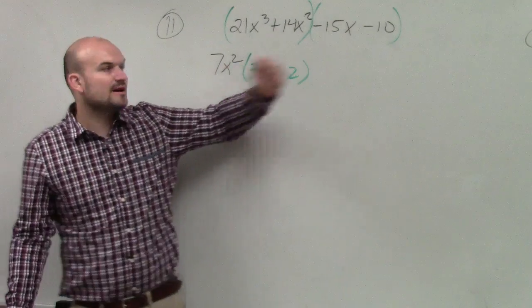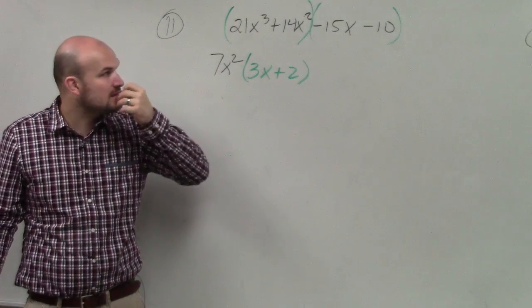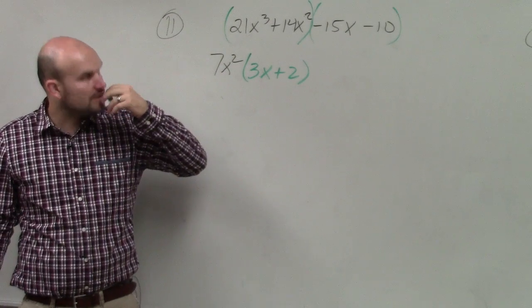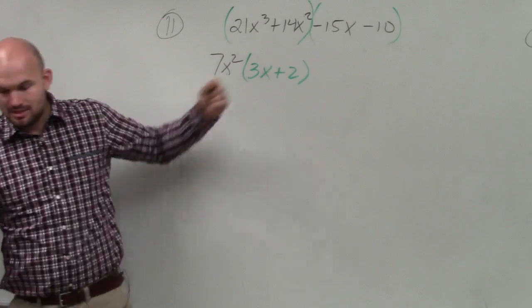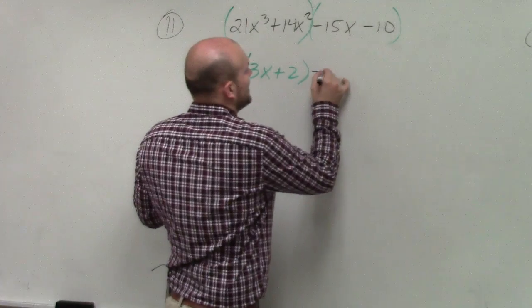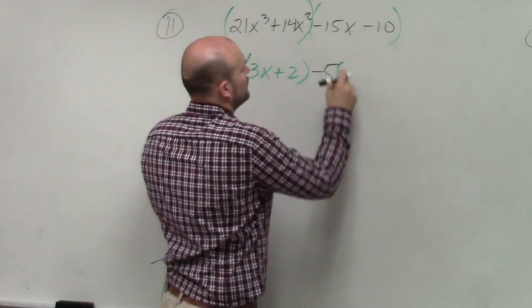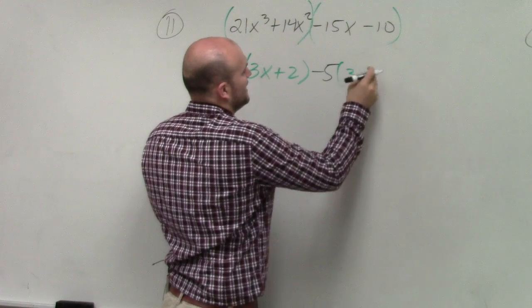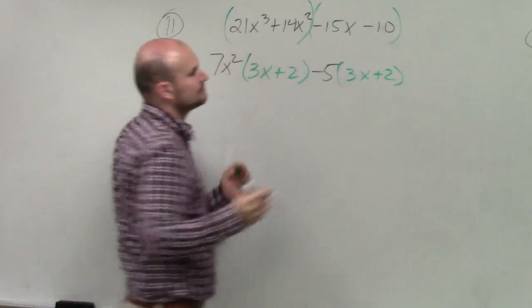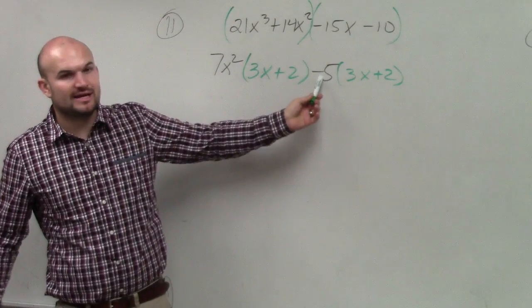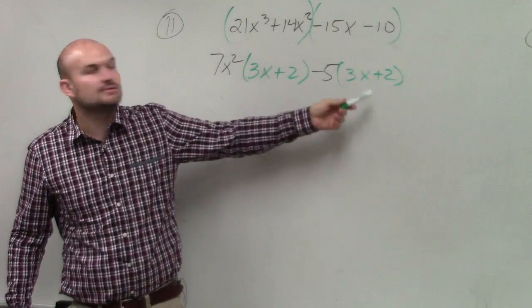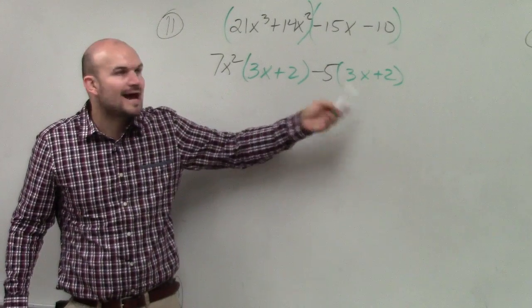Now let's look at these two. What do these two have in common? What can I factor out of them? 5. You could do a 5. Let's do a negative 5, because I want it to look like this. So if I factor out a negative 5, what I'm left over with is 3x+2. Negative 5x divided by negative 5 would be positive 3x, right?